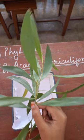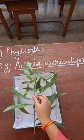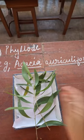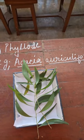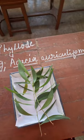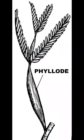In phylode, the petiole of the leaf is behaving like a leaf. What happens in phylode? You will see that there is a main stem, there is a small stalk, and then a leaf. What happens in Acacia? In Acacia, you will see structures like this.